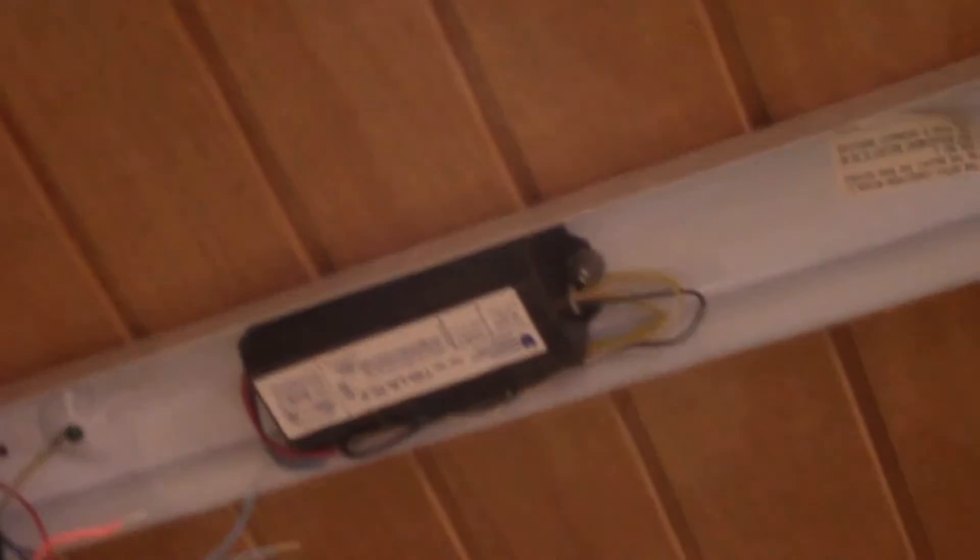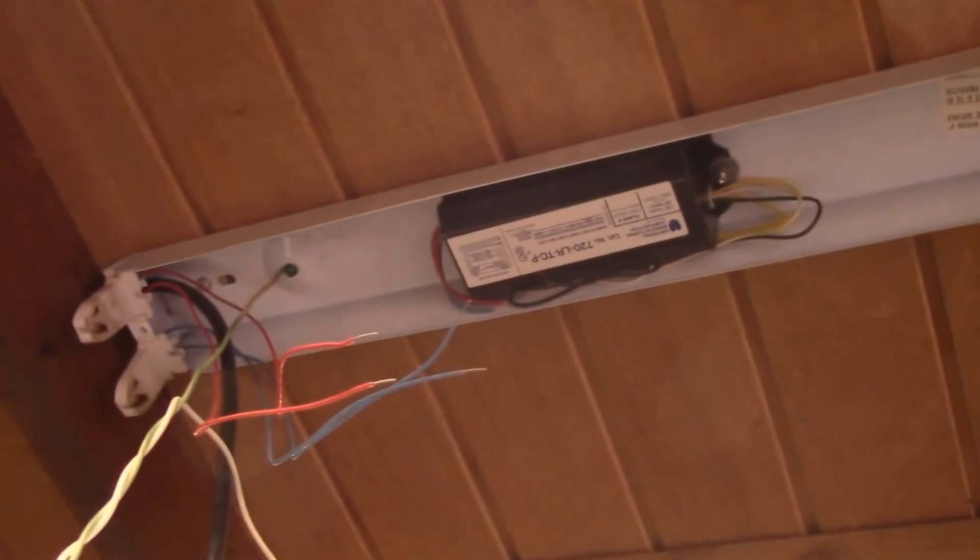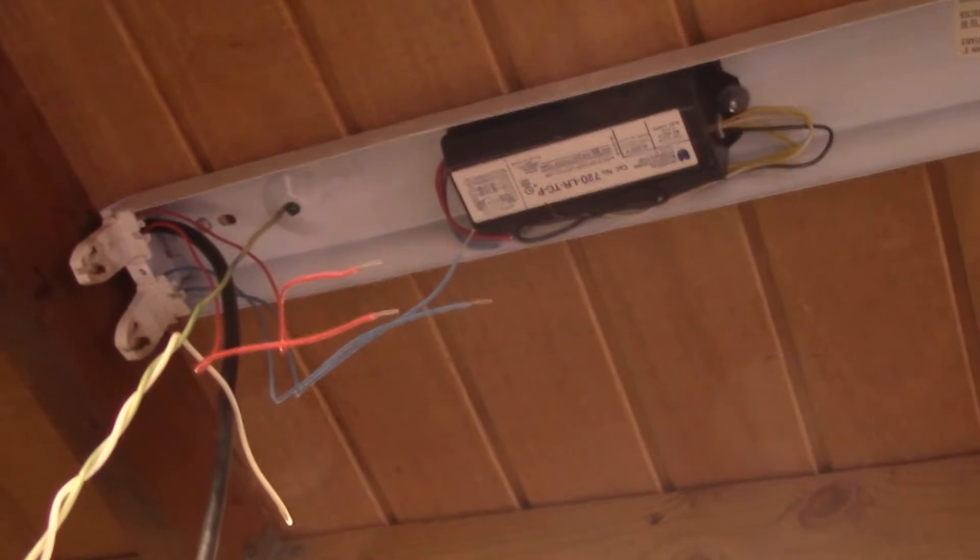You can remove that ballast, but to do that I'd have to take the fixture down because you can see the ballast is screwed in from above. And I might as well just leave it there. It doesn't hurt anything, it's not going to be connected. So I'll show you what it looks like once I get all the wires hooked up here.